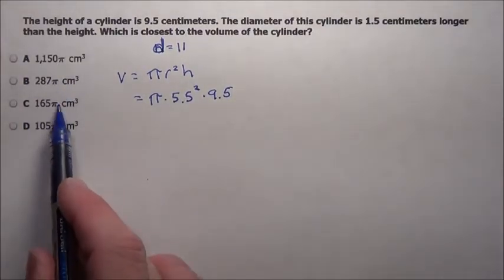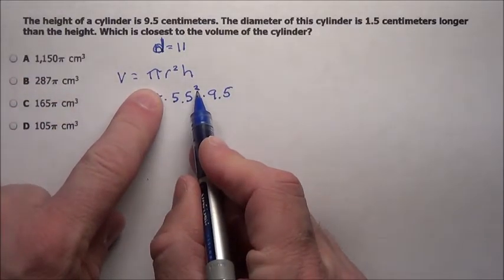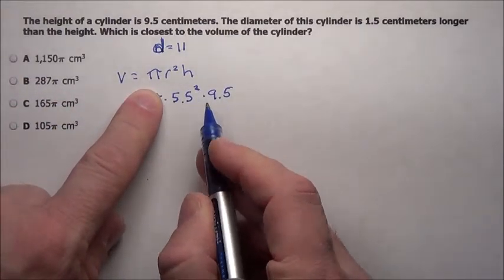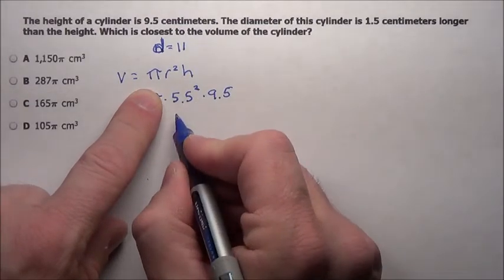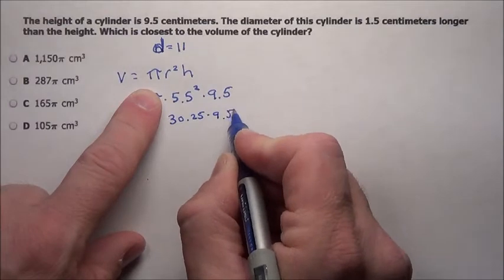Now, notice all my answers over here are in terms of pi, so we're just going to go ahead and leave that line. We're just going to do 5.5 squared times 9.5. 5.5 squared is simply 30.25 times 9.5.